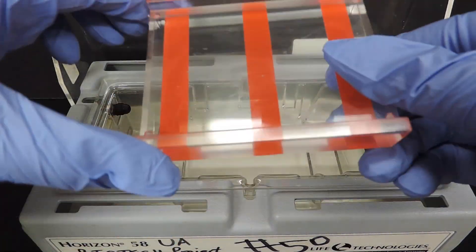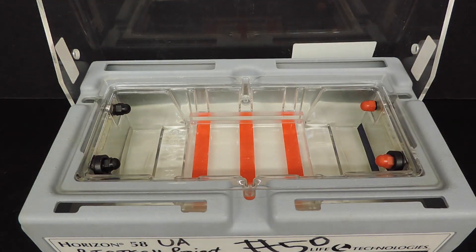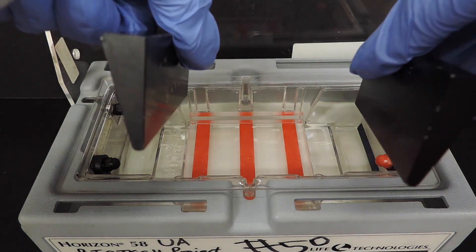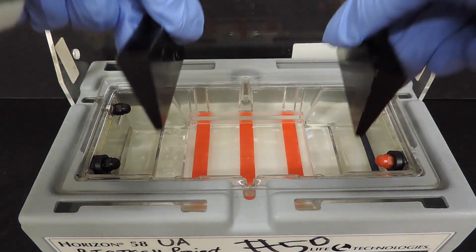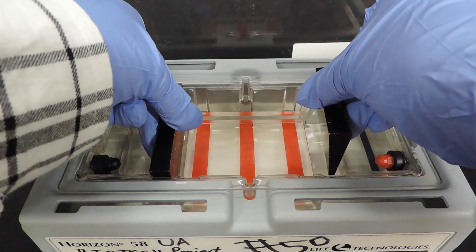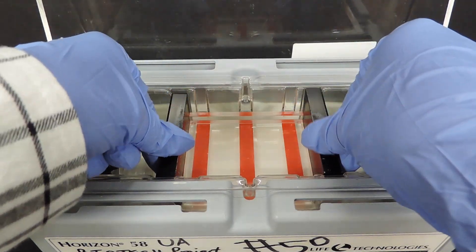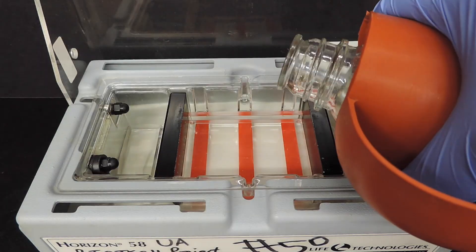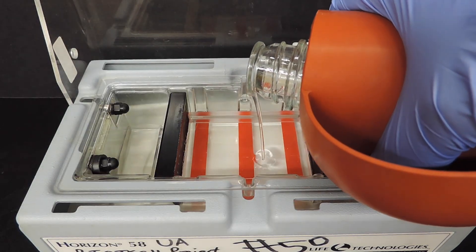Place the casting tray into the electrophoresis box. Place stoppers or tape at each end of the casting tray to create a seal before pouring your liquid agarose. Steadily pour the gel in the middle of the casting tray.